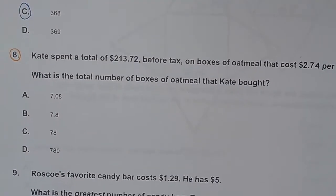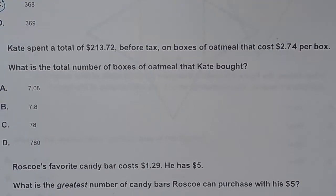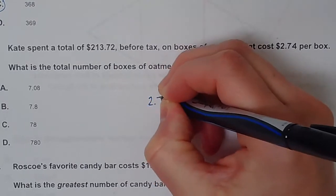Number eight: Kate spent a total of $213.72 before tax on boxes of oatmeal that cost $2.74 per box. What is the total number of boxes of oatmeal that Kate bought? So another division problem.